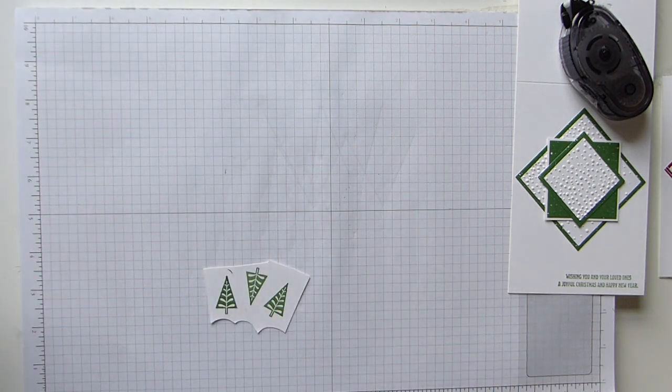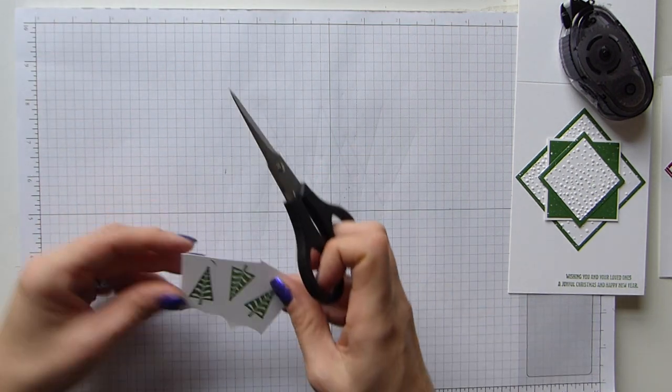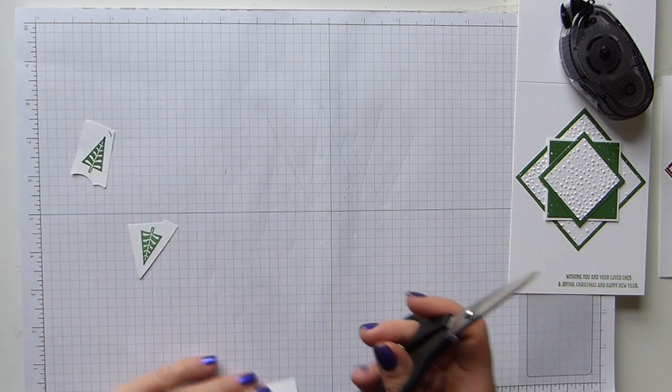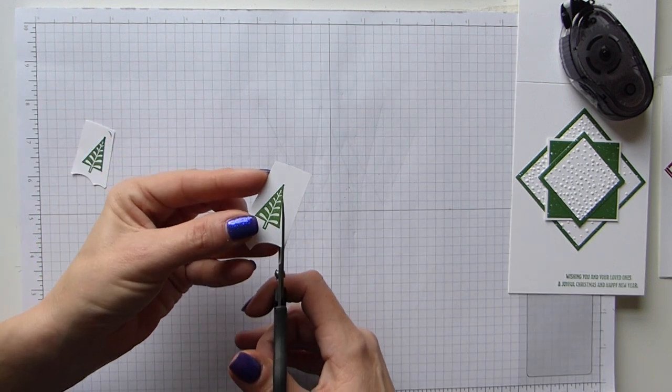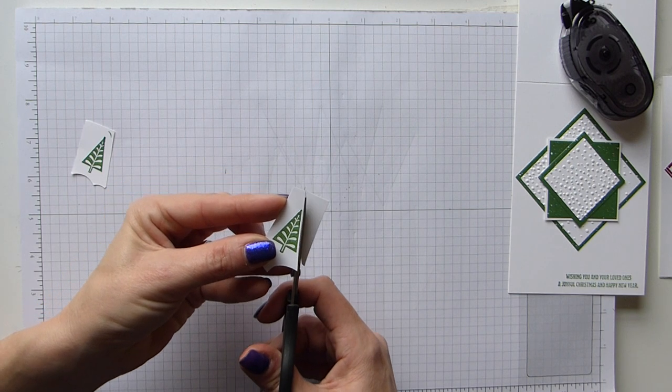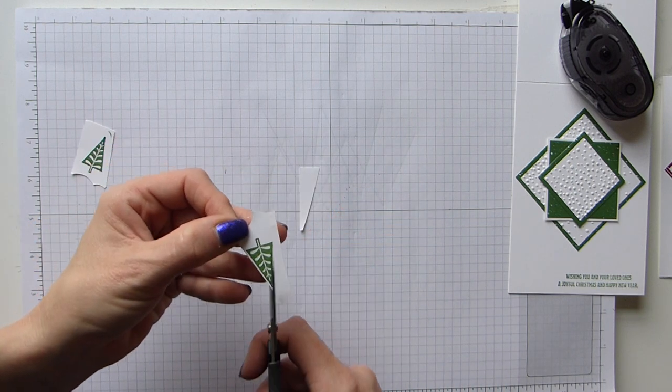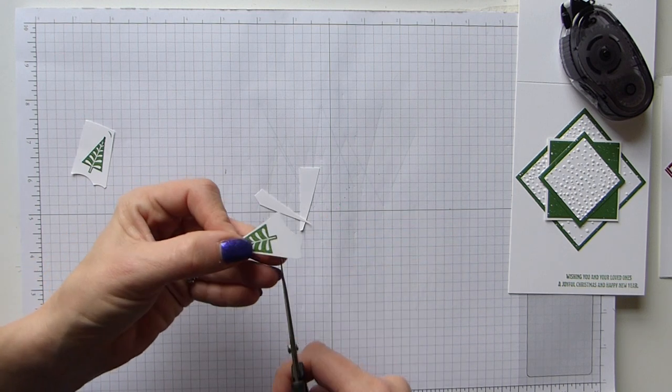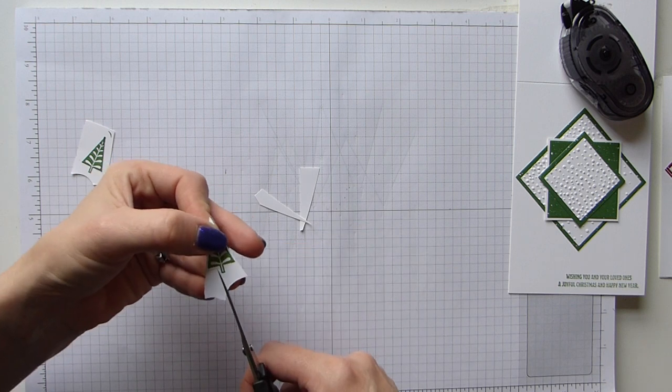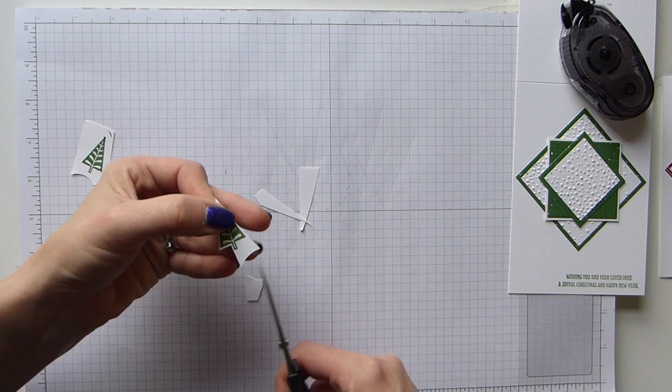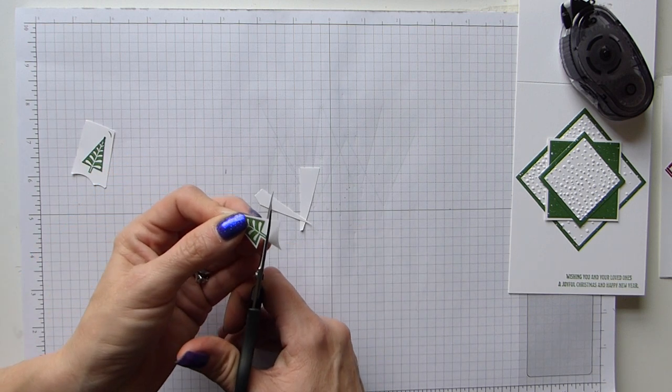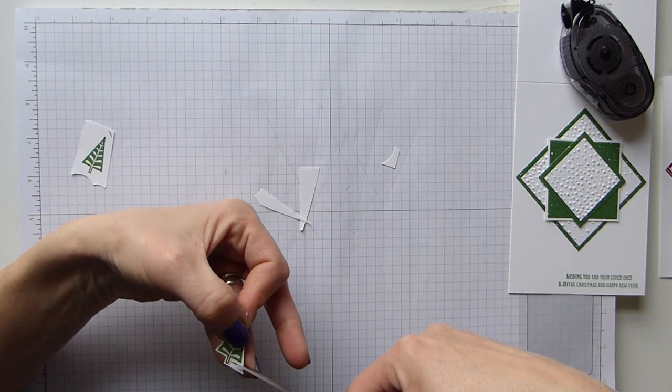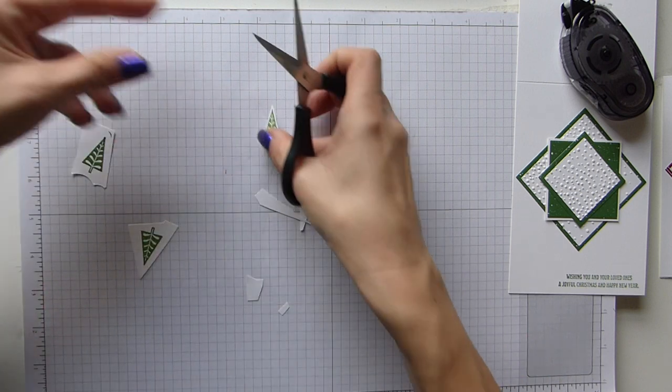Cover that up, and then I just grab my paper snips, and I first of all just separate them. And then all I do, because this is a very simple shape, is just cut up one side. I mean, this literally took me maybe one minute. And I just cut across, up by the branch, sorry, the trunk, across the bottom, up, and across. And there's one done.